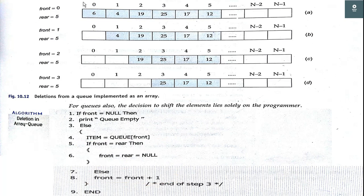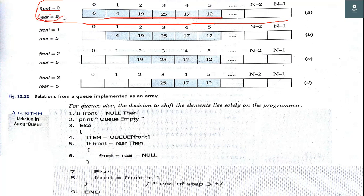After deleting the element we will return the element to the main function, so the user knows which element was deleted. In the first example we have 6 elements, front equal to 0 and rear equal to 5, because the front element is at 0th index and the last element is at 5th index. To delete an element from this array queue we delete the front element by simply incrementing the front. The front is incremented — that is the only thing you have to do to delete an element from a queue.